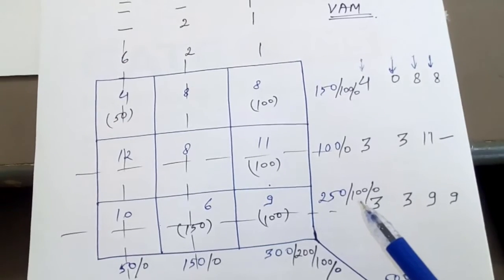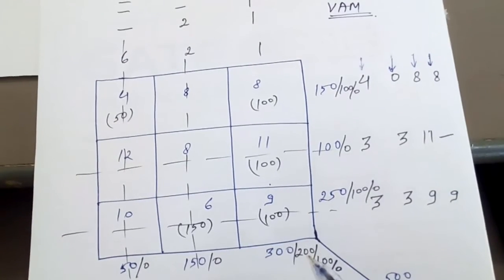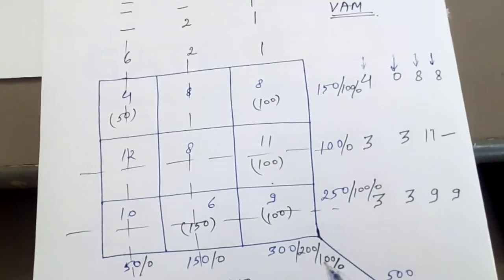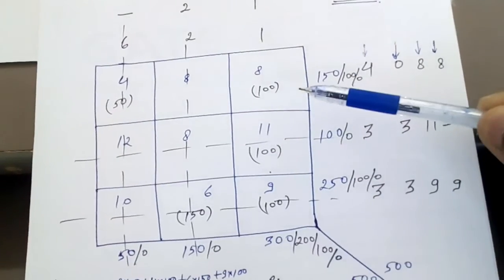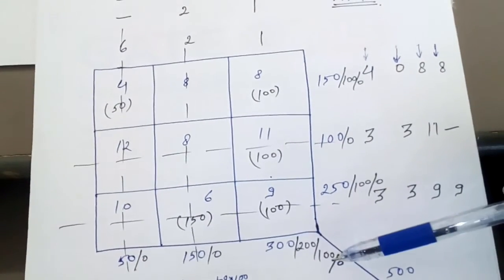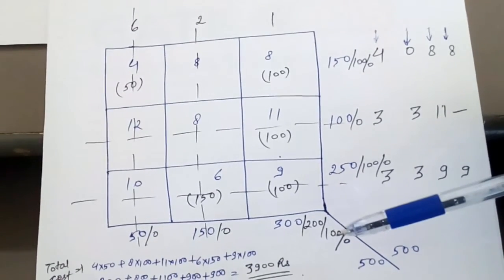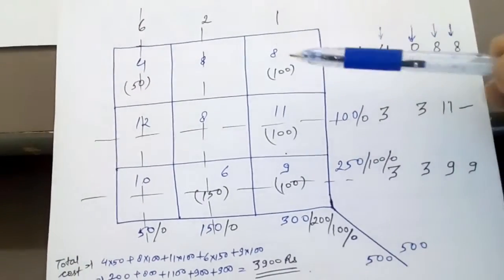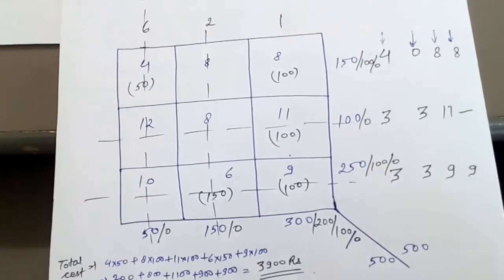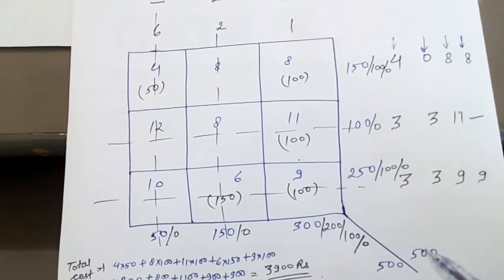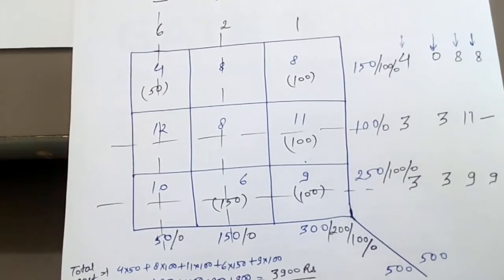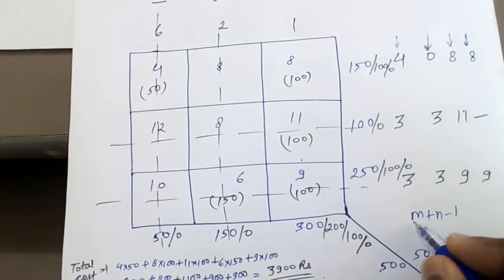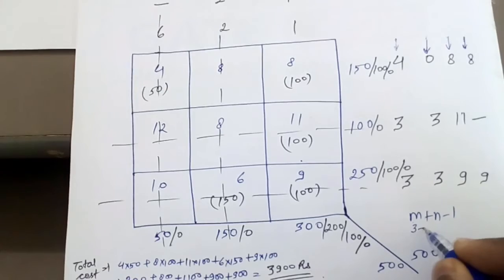The allocation is complete. Check: number of allocations should equal m + n − 1 = 3 + 3 − 1 = 5. Counting the allocations: 1, 2, 3, 4, 5 — correct, so the solution is optimal. The total transportation cost is: 4×50 + 8×100 + 11×100 + 9×100 + 6×150 = 3900 rupees.